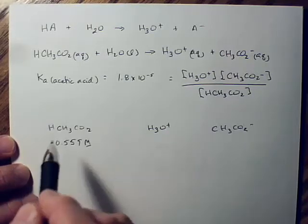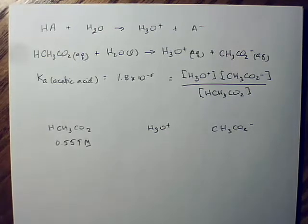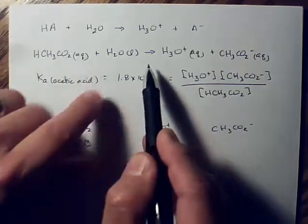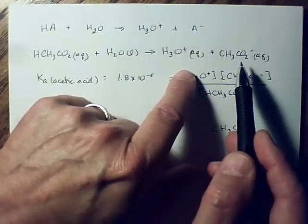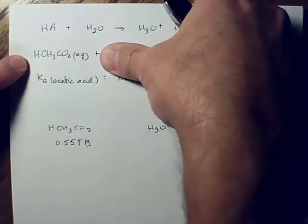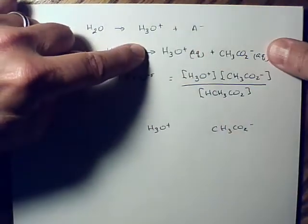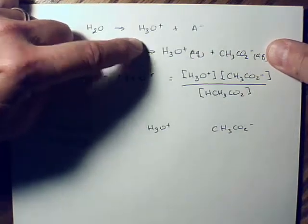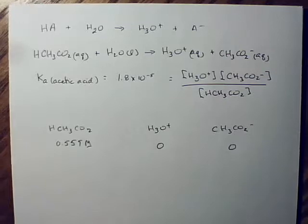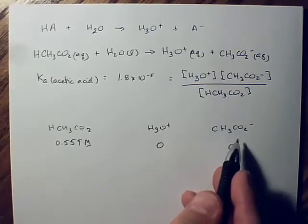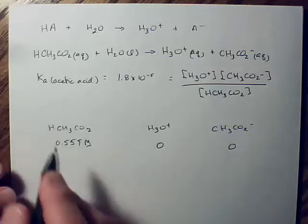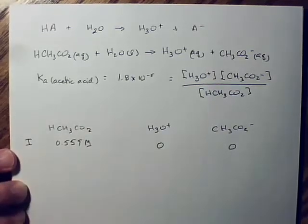And when we first dissolve it in there, we're going to theoretically think about this as we've got all of this and none of this has happened yet. Theoretically, we're thinking about it this way. We dissolve this in here and nothing has been dissociated yet. So, initially, we've got no concentration of hydronium and acetate. Initially, before it breaks apart. So, that's initial.